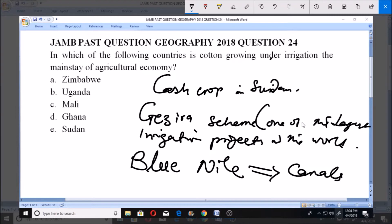And this is to tenant farms lying between the Blue Nile and the White Nile rivers. So this is actually a very big irrigation project and cotton is a major cash crop in Sudan, and that makes option E the right answer for this. Thank you.